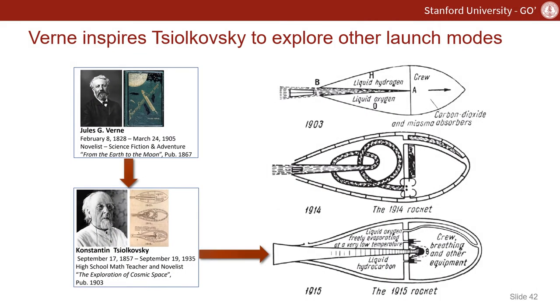Tsiolkovsky publishes The Exploration of Cosmic Space in 1903, where he describes the use of a rocket using liquid hydrogen and oxygen as combustible propellants to provide a gradually increasing acceleration to promote human survivability.